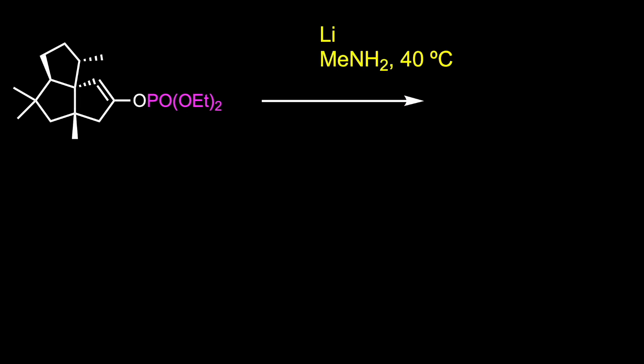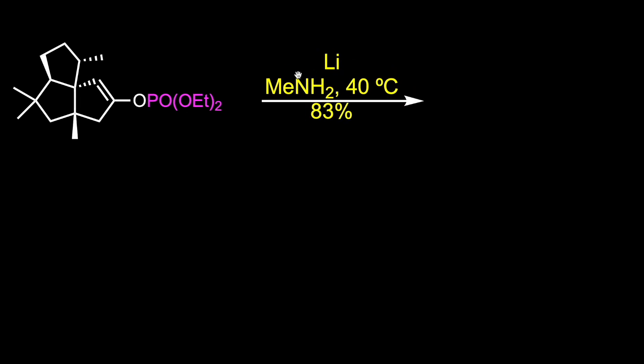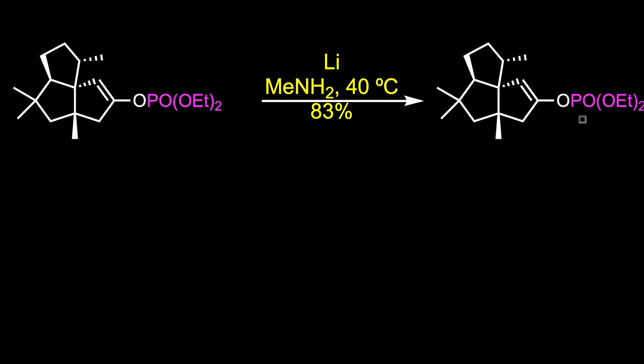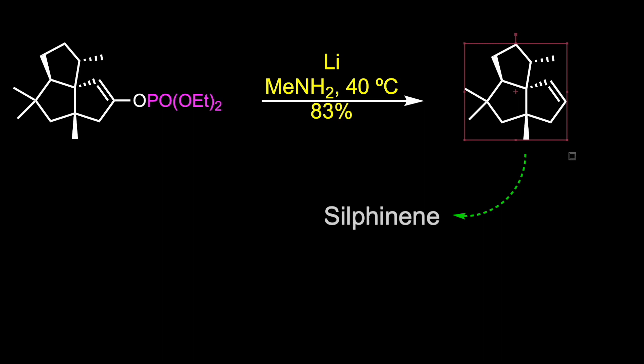Final reduction of the dienol phosphate by reaction with a mixture of lithium in methylamine resulted in the formation of silphinene.